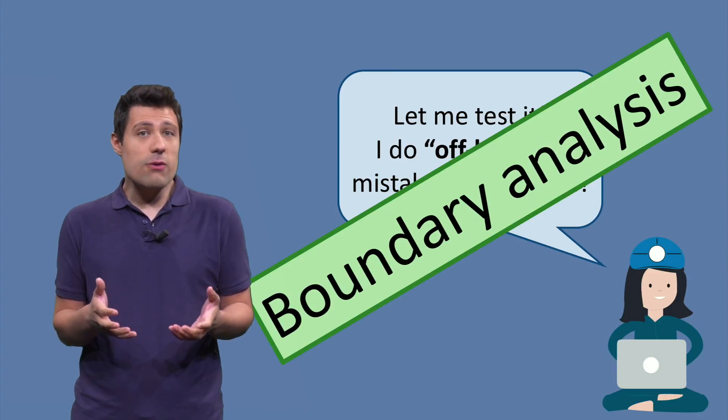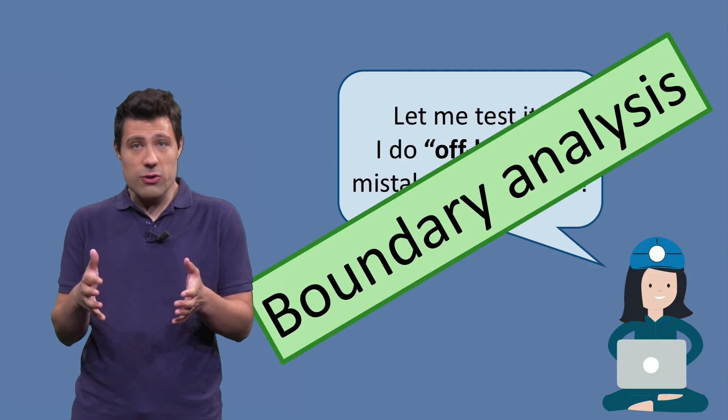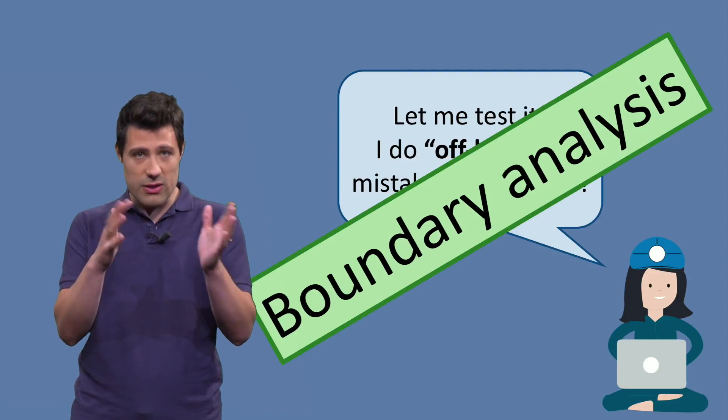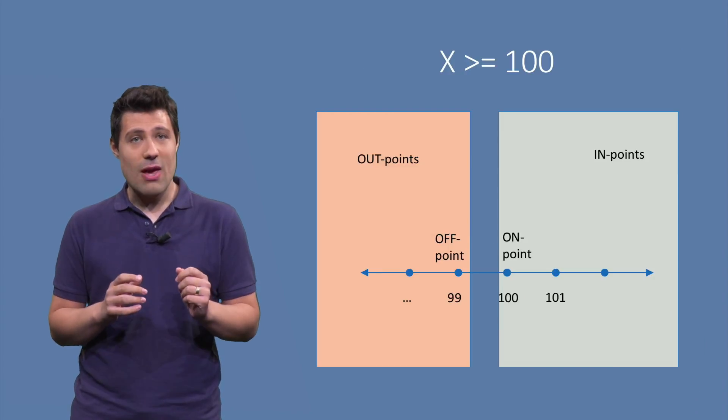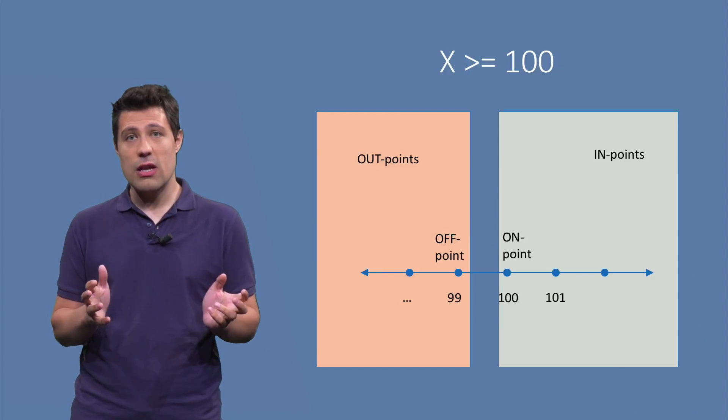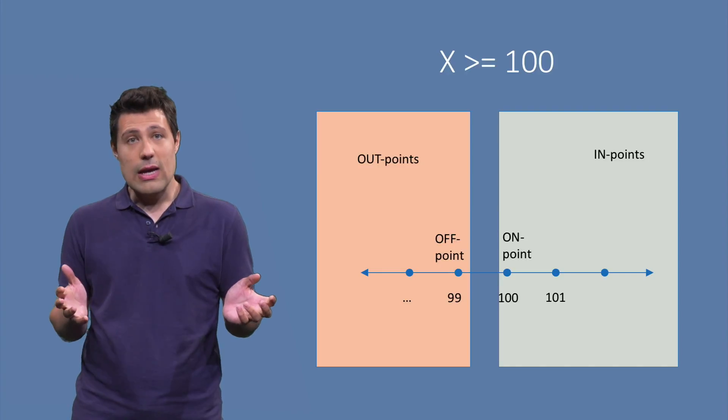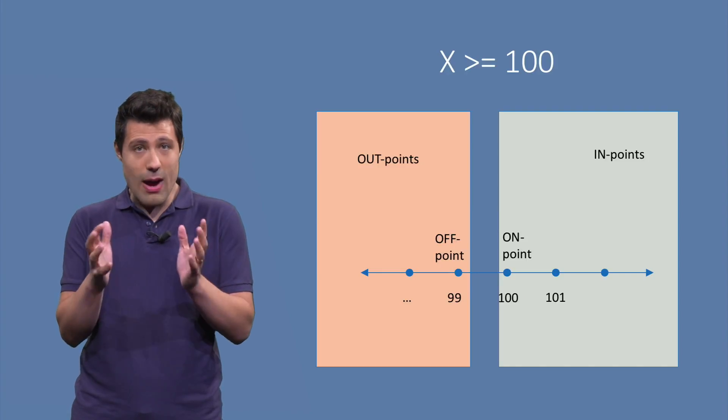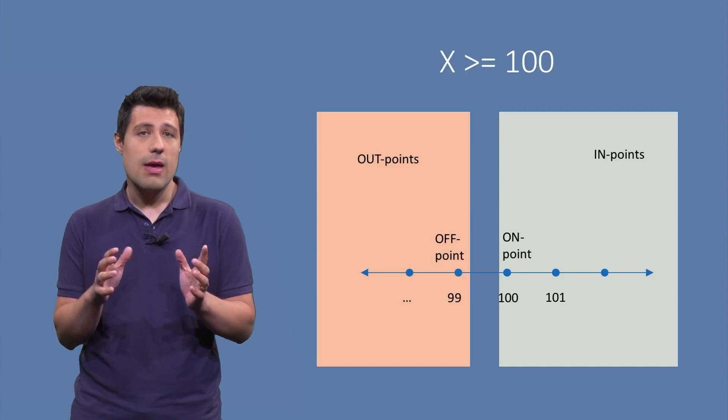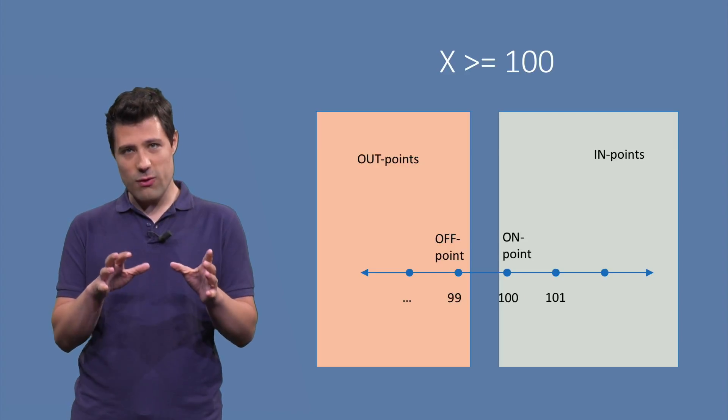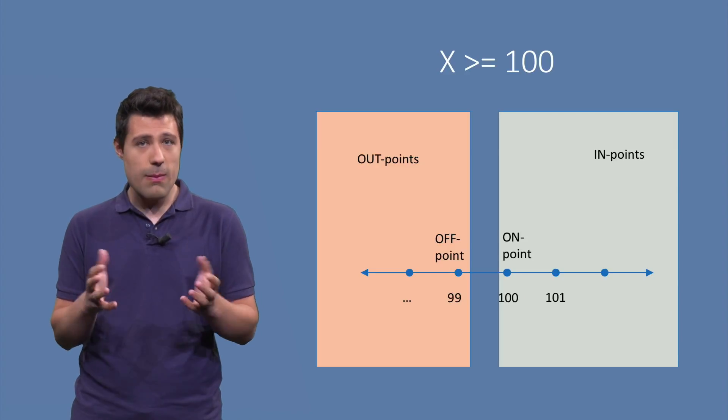The idea of boundary analysis is to look at the boundary and see what happens when our input is near this boundary. For example, if we have a condition that is x greater than or equals to 100, the 100 represents some sort of boundary that we have in our program. Making sure that our system behaves correctly when inputs are around this number makes total sense.